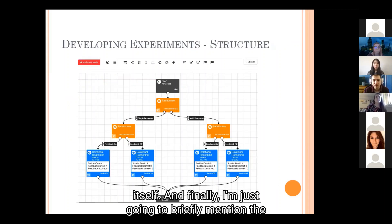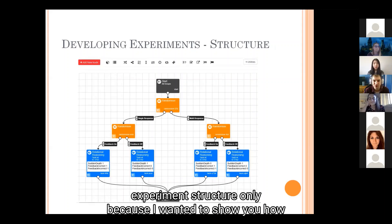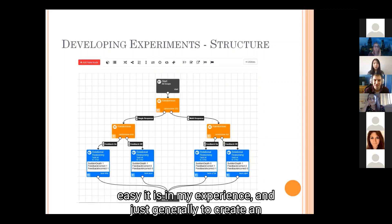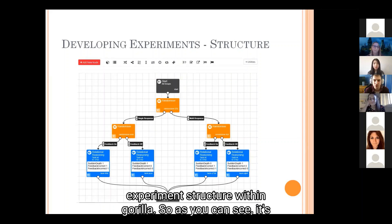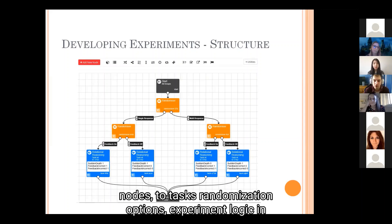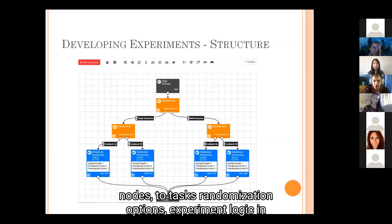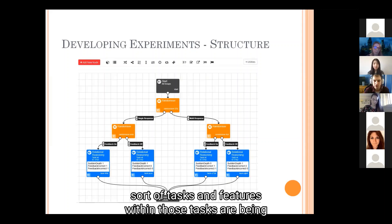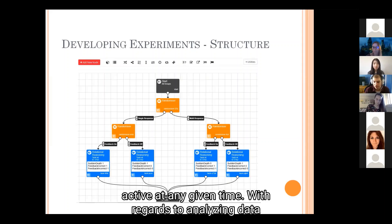The experiment structure is object-based — you essentially connect different nodes to tasks, randomization options, and experiment logic to control where participants go and what tasks and features are active at any given time. It's very easy to create an experiment structure within Gorilla.